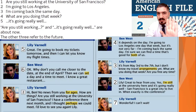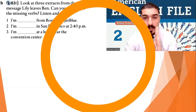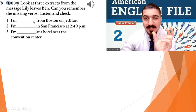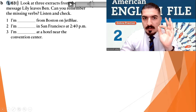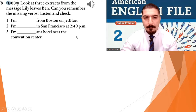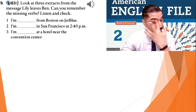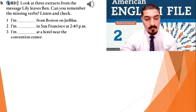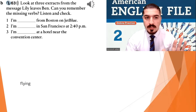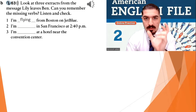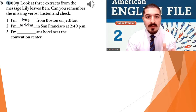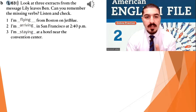Well done. Now this is just a start — bear with me. I need you to listen and fill in the blanks. Listen and complete. 1.63. One: I'm flying from Boston on JetBlue. Two: I'm arriving in San Francisco at 2.40 p.m. Three: I'm staying at a hotel near the convention center. So — I'm flying from Boston on JetBlue, JetBlue is the company. I'm arriving in San Francisco at 2.40 p.m. I'm staying at a hotel near the convention center.